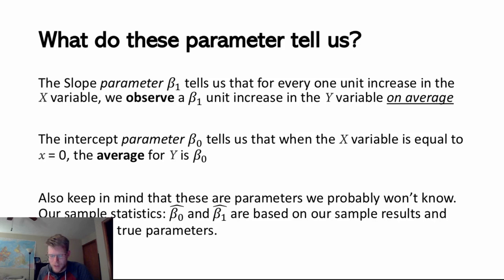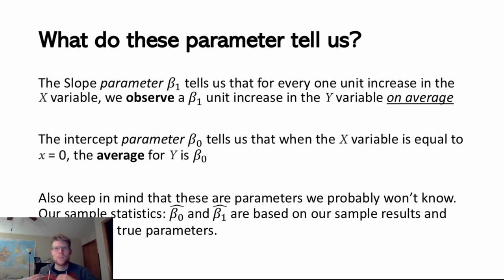Whenever we use a capital letter to talk about a variable, we're talking about the existence of the random variable — where this can take really any value — whereas a lowercase x is talking about one particular value that I could plug in. It's not a super important thing in this class, but we will be using that terminology here and there. A capital letter represents the random variable; a lowercase letter represents a specific value we could plug in for that random variable.